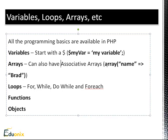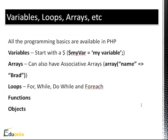We can also have associative arrays, which are extremely helpful. You create an array and give it a key — for example, 'name' as a key and 'Brad' as the value. These are also known as hashes if you've worked with Ruby on Rails. In PHP they're called associative arrays. For loops, we have for, while, do-while, and foreach, which is used for arrays — like the for-in loop in JavaScript, but in PHP it's foreach.